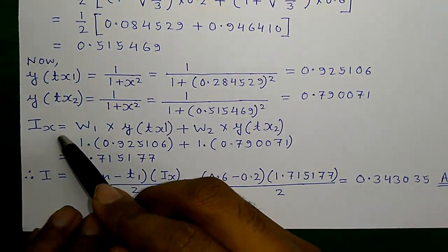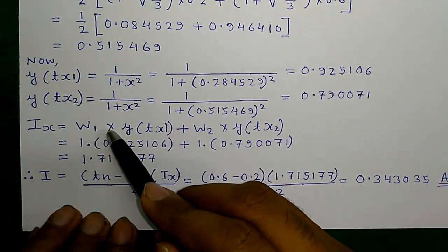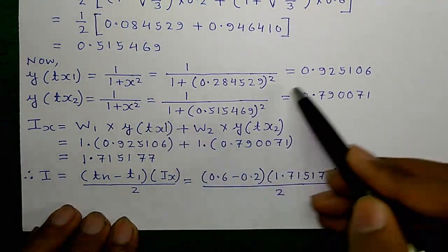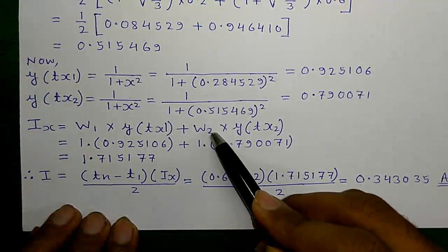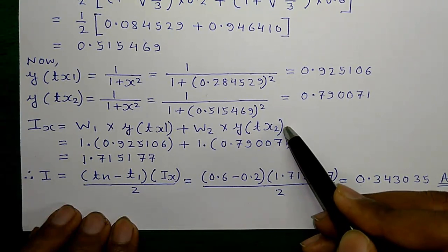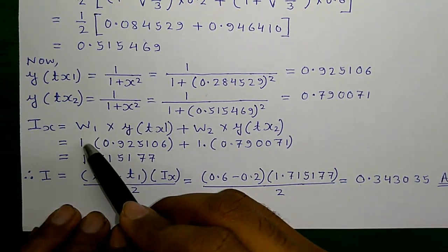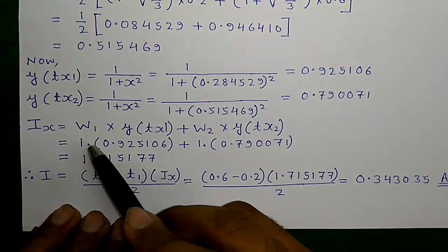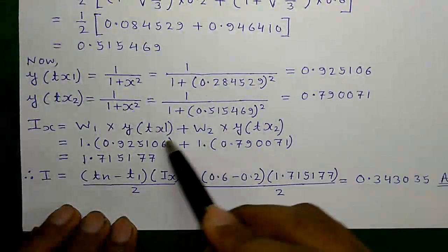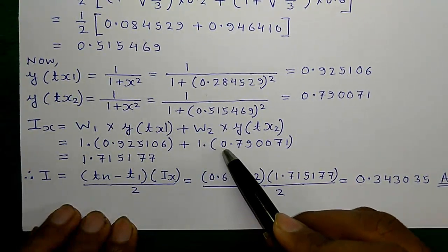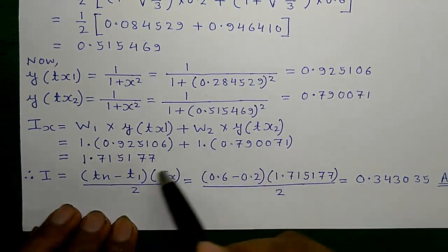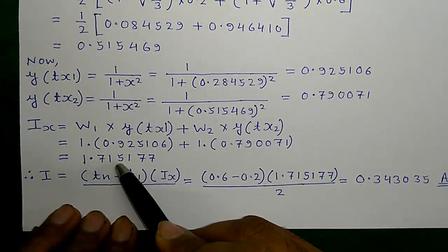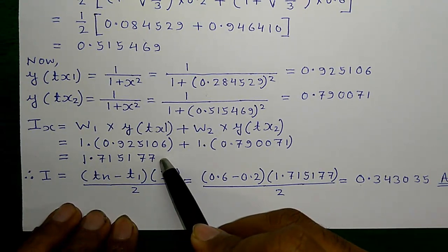Next, we will calculate the Ix which is equal to w1 into y of Tx1 that is this value plus w2 into y of Tx2. So, w1 we know is 1 and w2 is also 1. So, w1 into this value plus w2 into this value. That is equal to 1.715177.